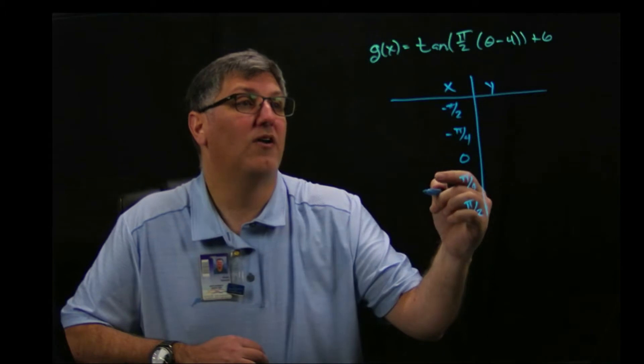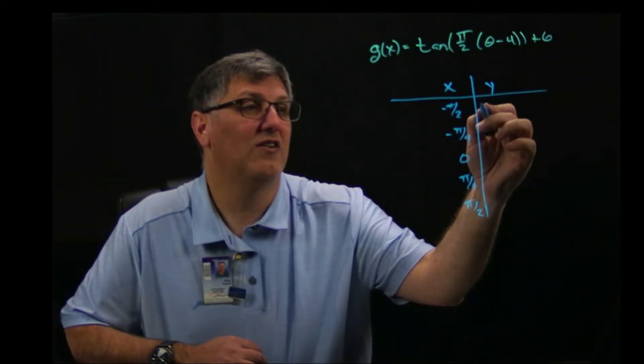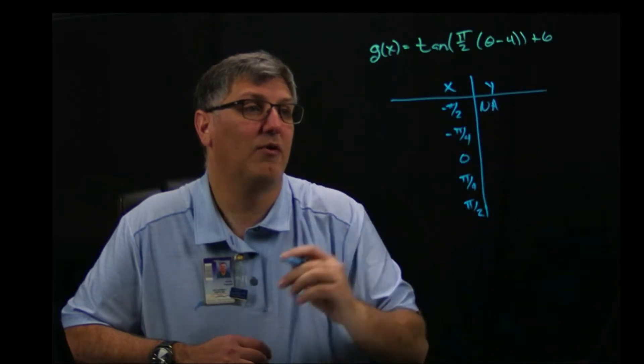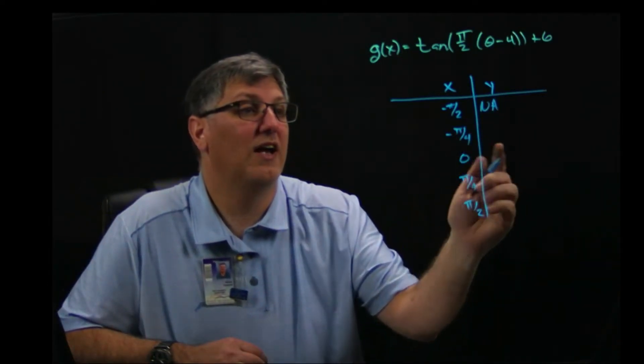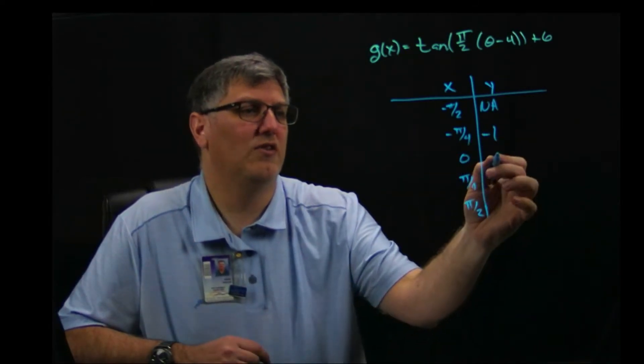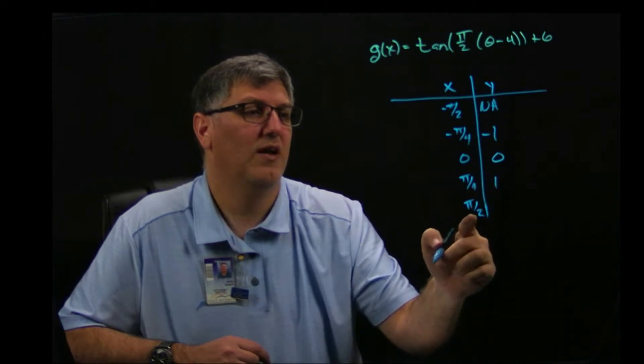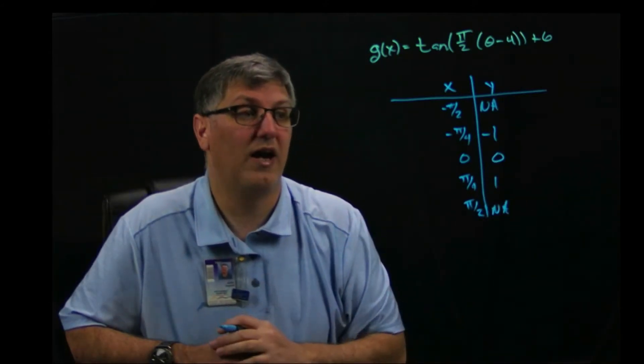All right, so negative pi over 2 for tangent, well, this does not exist. So I'm going to put NA, not applicable. That's a vertical asymptote. Tangent at negative pi over 4 is negative 1. At 0, it's 0. At pi over 4, it's 1. And at pi over 2, once again, we have another vertical asymptote, so not applicable.